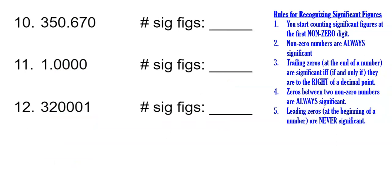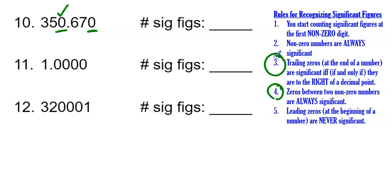Number ten has a zero sandwiched between two non-zero numbers and a trailing zero at the end. By rule four, the sandwiched zero is significant. For the trailing zero, rule three tells us it is significant only if it is to the right of a decimal point — and there is a decimal point, so that zero is also significant. Starting at the first non-zero number, the three, we count: one, two, three, four, five, six significant figures.